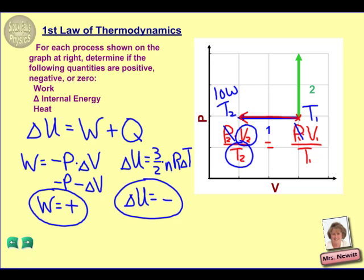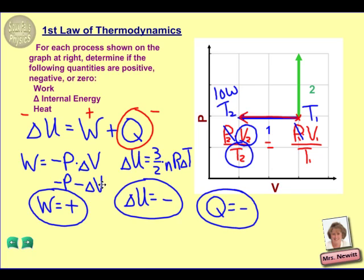Finally, we're going to do heat. Remember that heat can be thought of as sort of a process of elimination. In our equation, if we have a value for work that is positive and a value for delta U that is negative, the only way for this to work out is for Q to be a negative number. It needs to be a relatively large negative number to cancel out work and give us a negative answer for delta U. By process of elimination using the first law of thermodynamics, Q must be negative. So for process one: positive work, negative delta U, and negative Q.